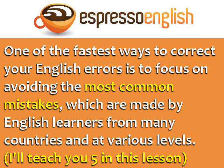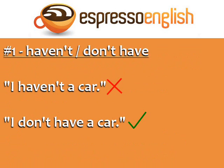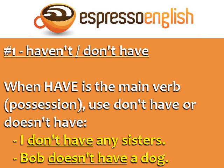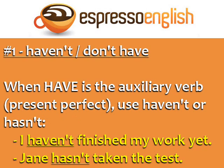I'll teach you five in this lesson. Number one: the difference between haven't and don't have. "I haven't a car" is incorrect. The correct sentence is "I don't have a car." When have is the main verb meaning possession, we use don't have and doesn't have. For example: I don't have any sisters. Bob doesn't have a dog. When have is the auxiliary verb, like in the present perfect, we use haven't and hasn't. For example: I haven't finished my work yet. Jane hasn't taken the test.